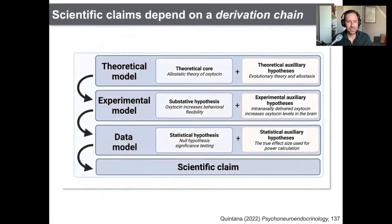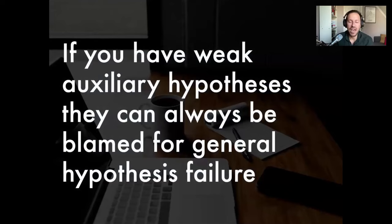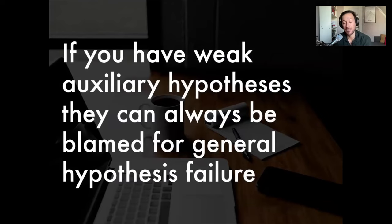Scientific claims depend on a derivation chain: it starts with a theoretical model, those models are tested by experiments, and those experiments are tested by data, which gets you to your scientific claim. If you have weak auxiliary hypotheses, they can always be blamed for general hypothesis failure. In the context of oxytocin research, if we find a non-significant result and we're not sure whether intranasal oxytocin actually reaches the brain, we can say: well, we didn't get an effect — is it because the theory wasn't supported, or because oxytocin doesn't reach the brain? We don't know. That's why it's very important to think about the auxiliary hypotheses supporting the hypotheses you are testing.